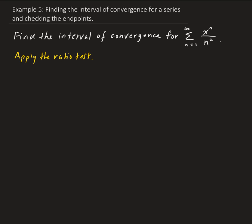We need the nth term and the (n+1)th term. The nth term for this series is x to the n over n squared, and the (n+1)th term is x to the n plus 1, all over n plus 1 squared.